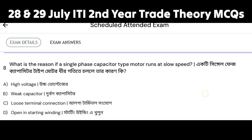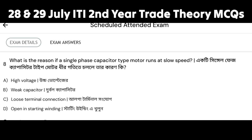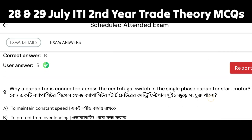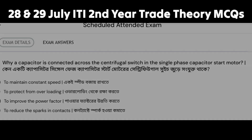What is the reason if a single-phase capacitor type motor runs at very low speed? The options are: high voltage, weak capacitor, loose terminal connection, and open in starting winding. Here we have to say the single-phase capacitor motor running at low speed — option B, weak capacitor, is the correct answer.